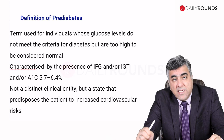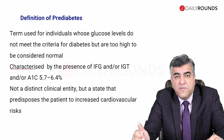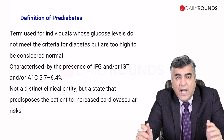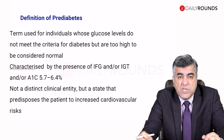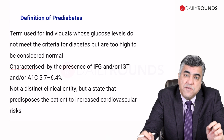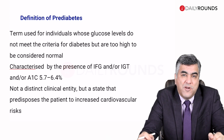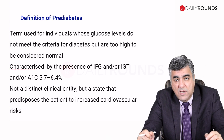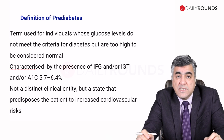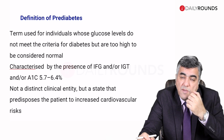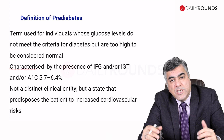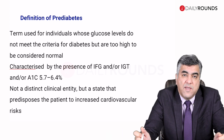Prediabetes is characterized by the presence of IFG or impaired fasting glucose, and/or IGT which is impaired glucose tolerance, and/or an HbA1c lying between 5.7 to 6.4 percent. It is not a distinct clinical entity but a state that predisposes the patient towards increased cardiovascular risk and the risk of progression from prediabetes to frank diabetes.